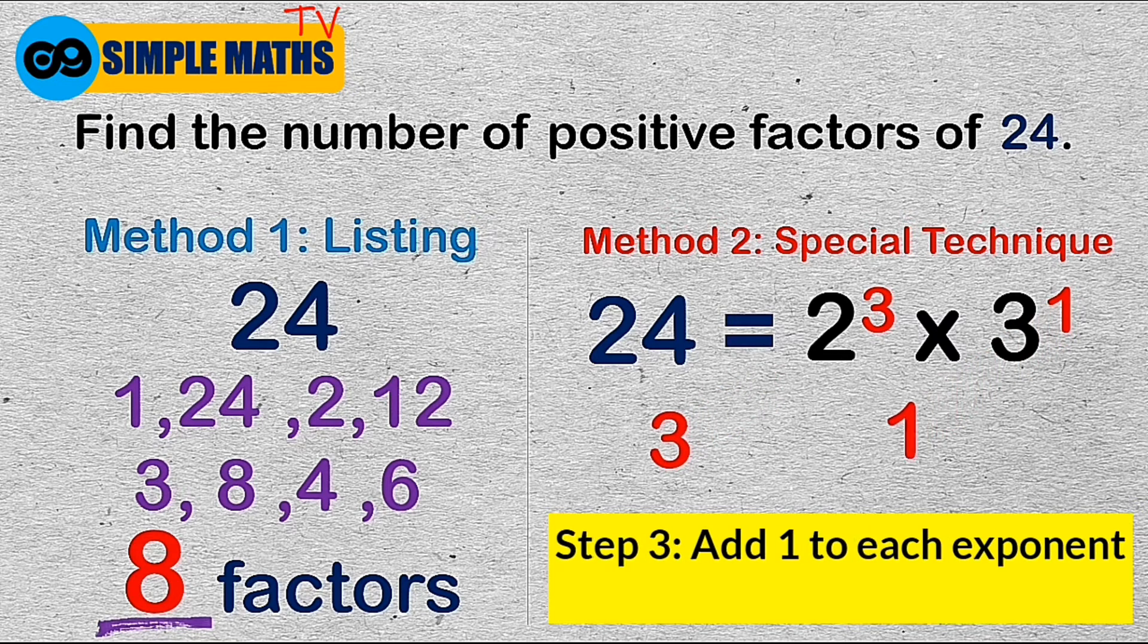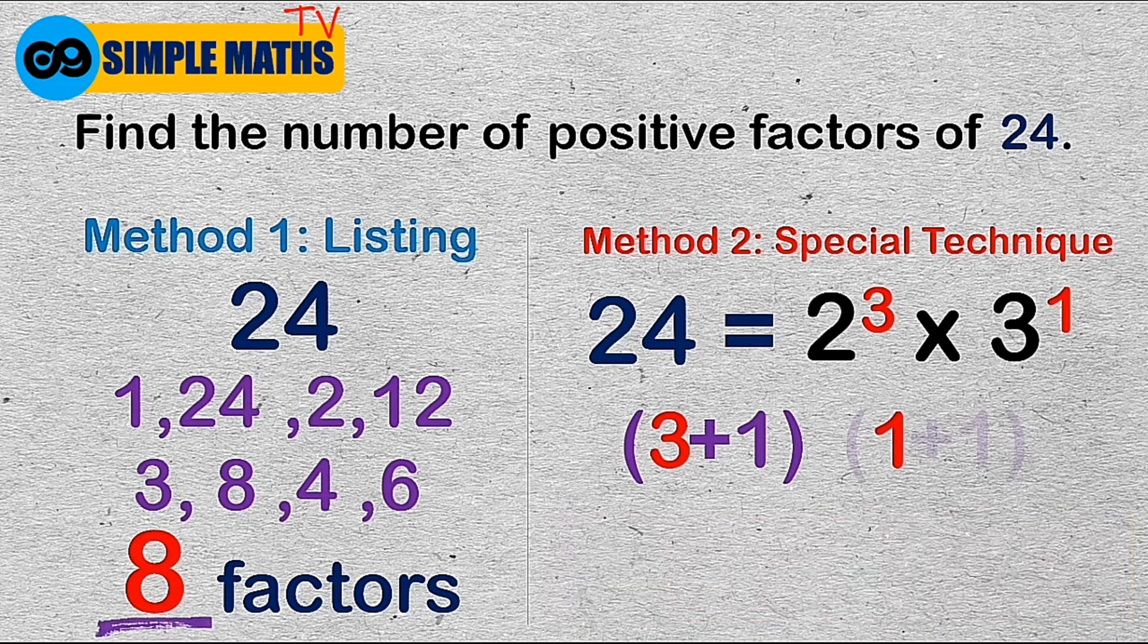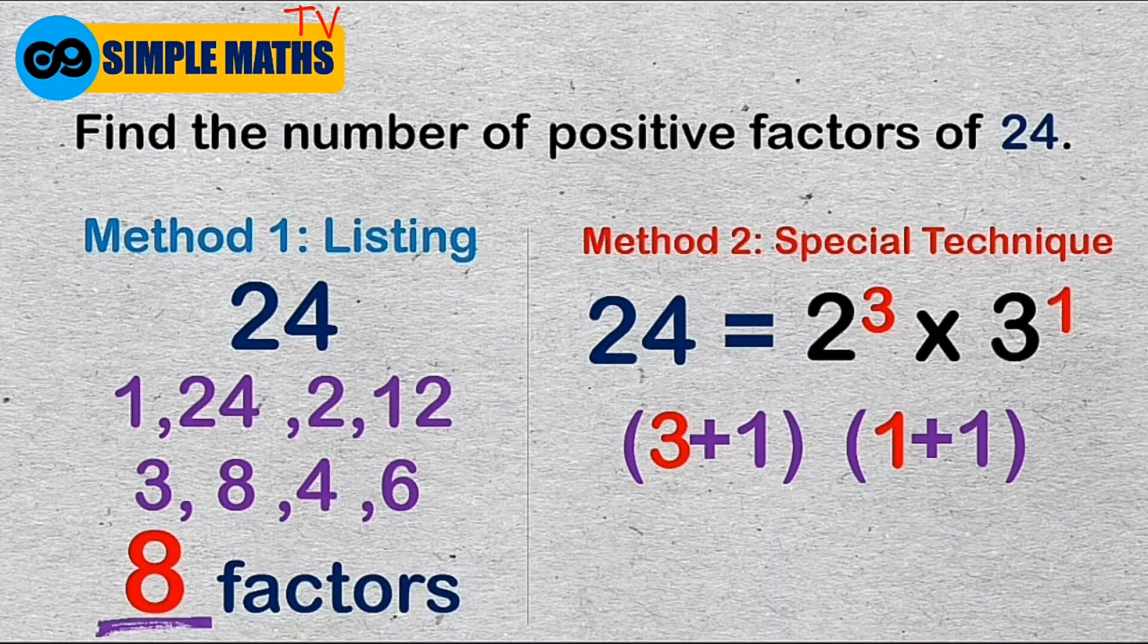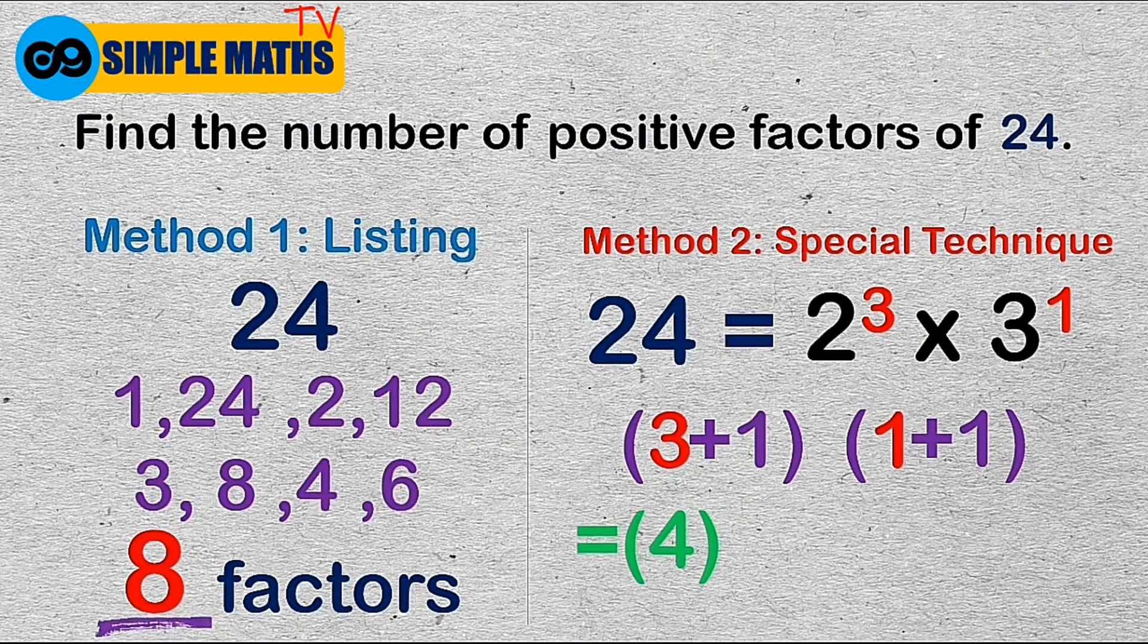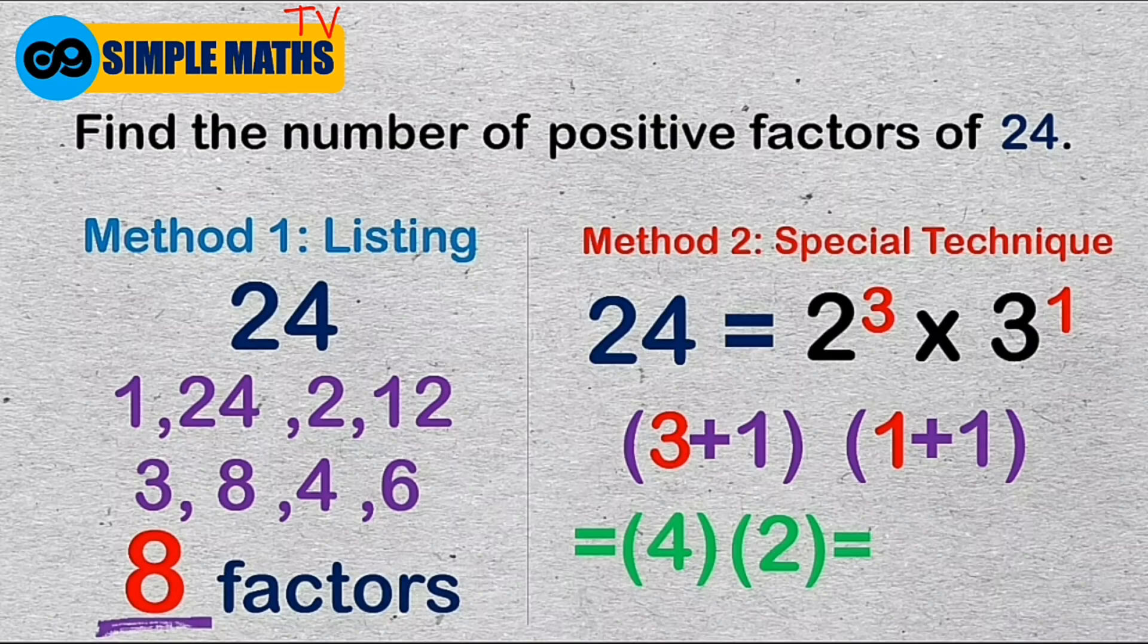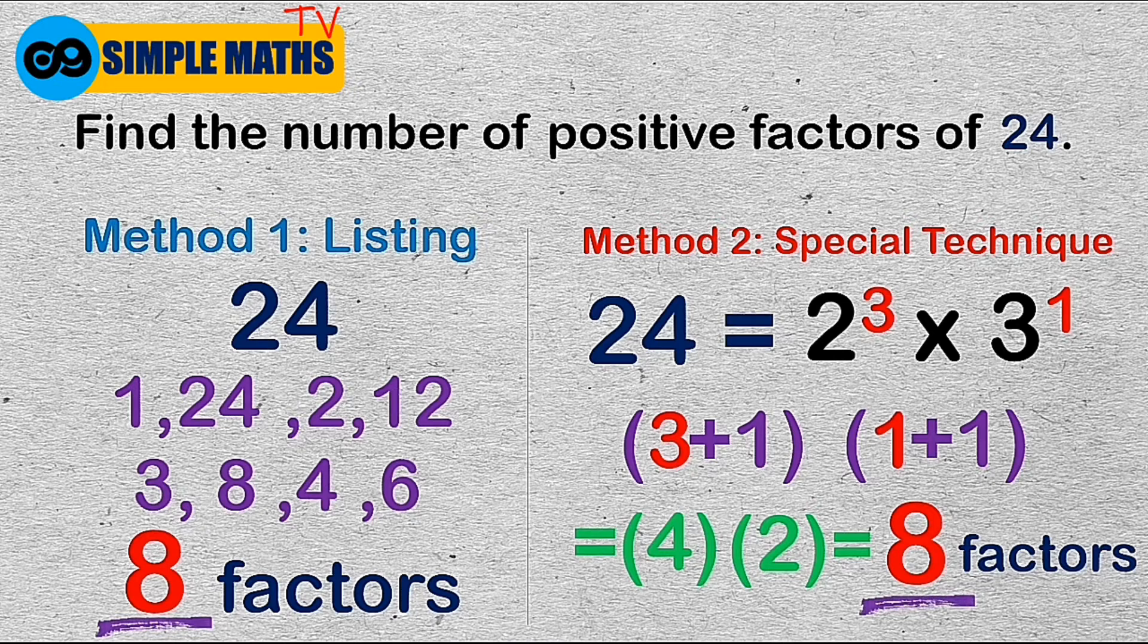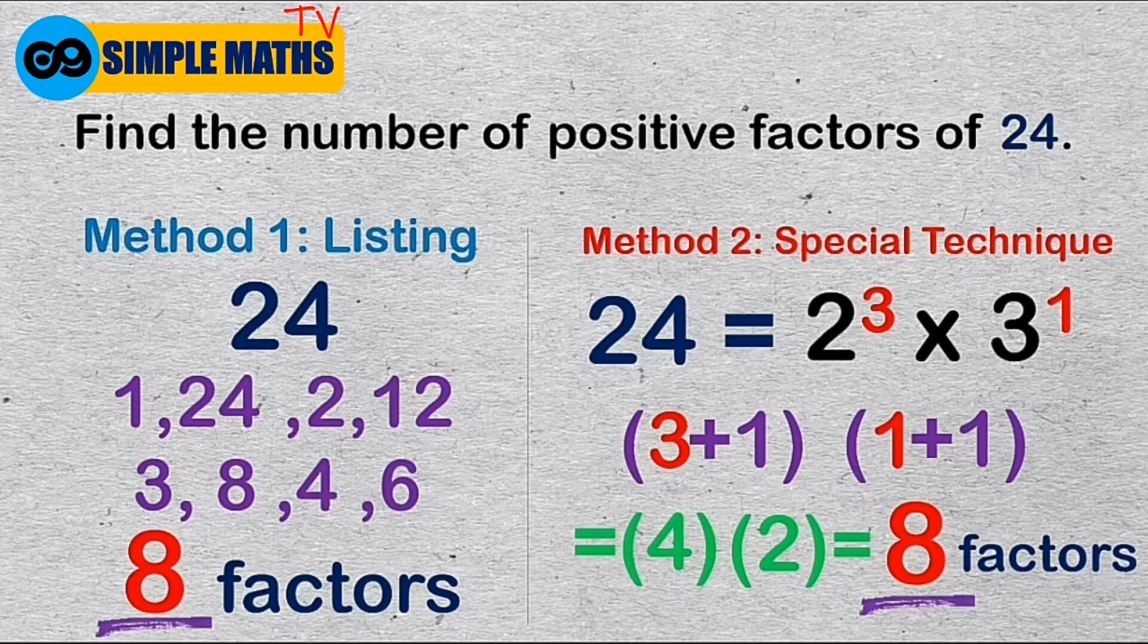We add 1 to each exponent and get their product. That's 3 plus 1 and 1 plus 1. 3 plus 1 is equal to 4. 1 plus 1 is equal to 2. We now have 4 multiplied by 2 is equal to 8. This product is the total number of positive factors of 24. Hence, there are 8 positive factors.